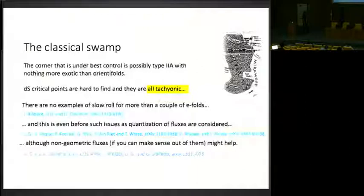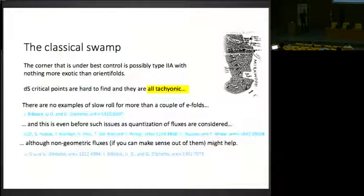So first, thinking about the classical swamp. That is something that people have been worrying about for a number of years, trying to see whether you can construct de Sitter solutions using really simple ingredients like fluxes and at most orientifolds, nothing more exotic than that. When you start to work with these different ingredients, you think that this shouldn't be too difficult, actually. Certainly there are lots of different parameters. Just if you tune them in the right way, you should be able to find something, at least a few examples.